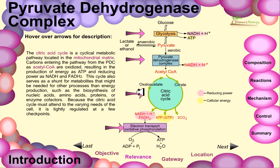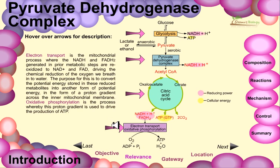The citric acid cycle is a cyclic metabolic pathway located in the mitochondrial matrix. Carbons entering the pathway from the PDC as acetyl-CoA are oxidized, resulting in the production of energy as ATP and reducing power as NADH and FADH2. The cycle also serves as a source of metabolites needed for other processes beyond energy production, such as biosynthesis of nucleic acids, amino acids, proteins, or enzyme cofactors. Because it must attend to the diverse needs of the cell, it is tightly regulated at a few checkpoints.